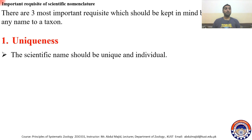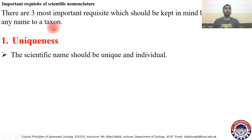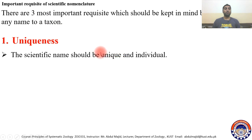Uniqueness means that the scientific name should be unique and individual. When you want to name a newly discovered taxon, that name must be unique — there will be no such name used before in the whole literature, and this name should be individual.